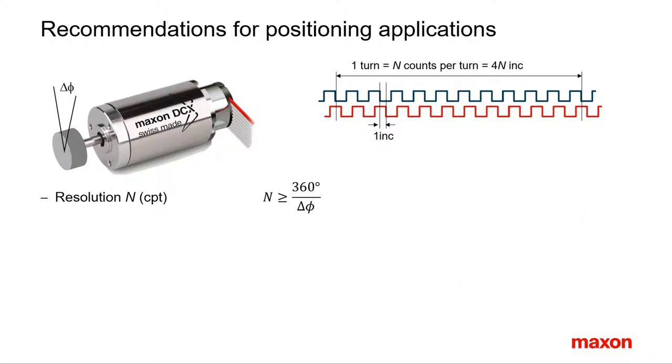The previous general rule states that the encoder resolution N in counts per turn should be higher than 360 degrees divided by the required positioning accuracy delta phi in degrees. For instance, an angular accuracy of 1 degree requires an encoder resolution of at least 360 counts per turn, resulting in a measurement resolution of 0.25 degrees.